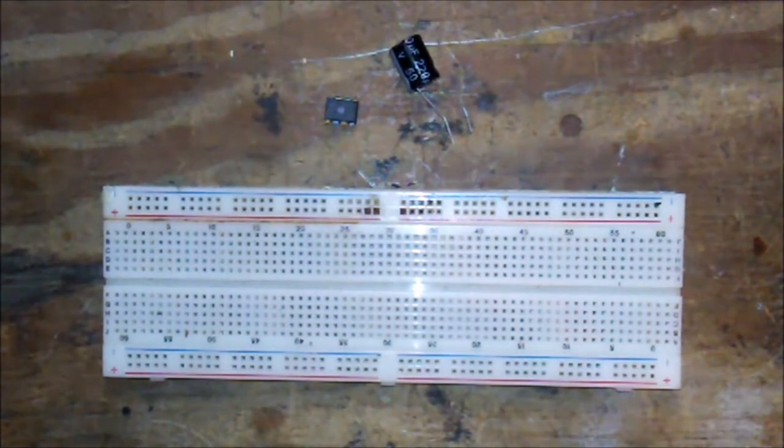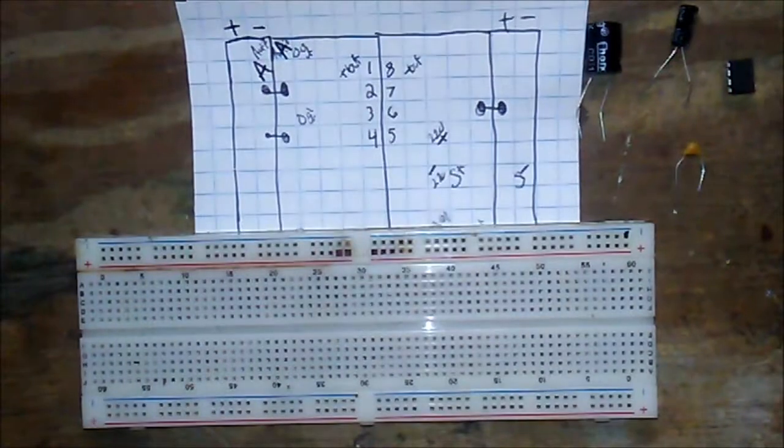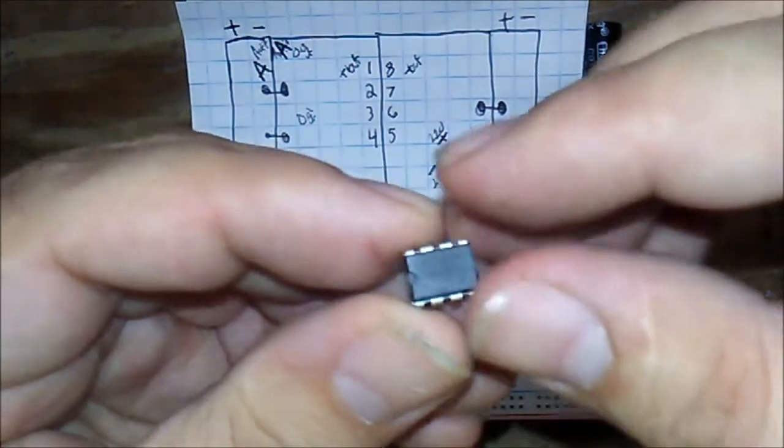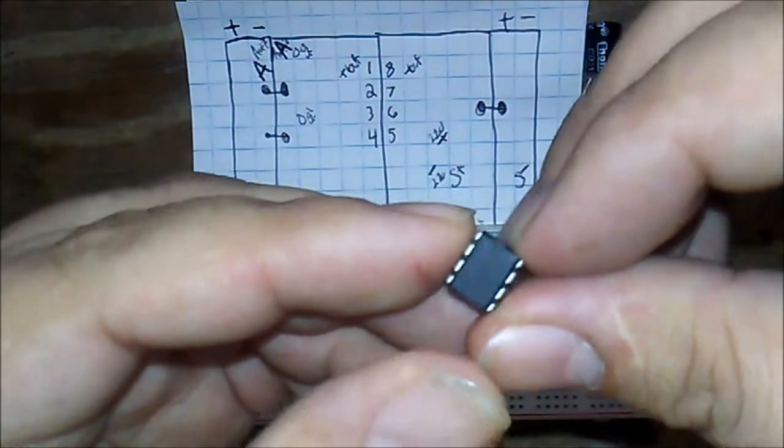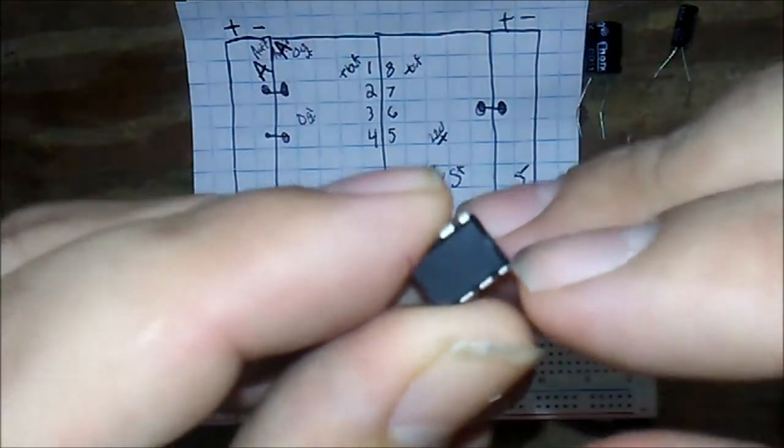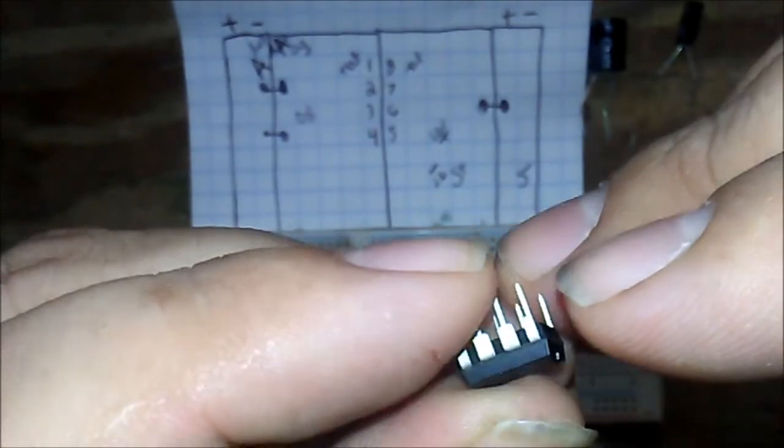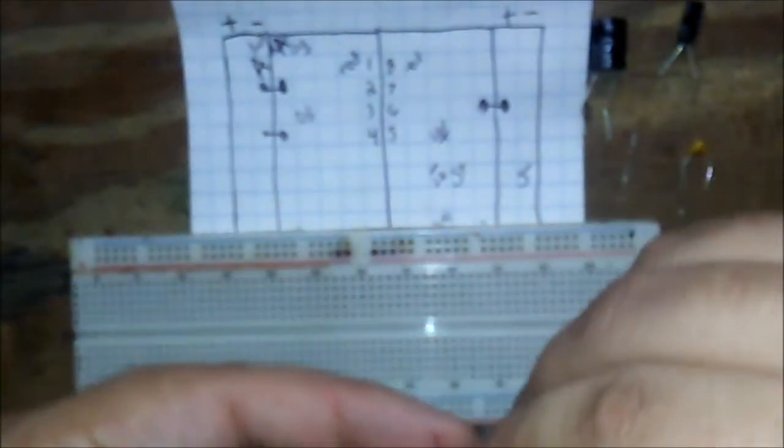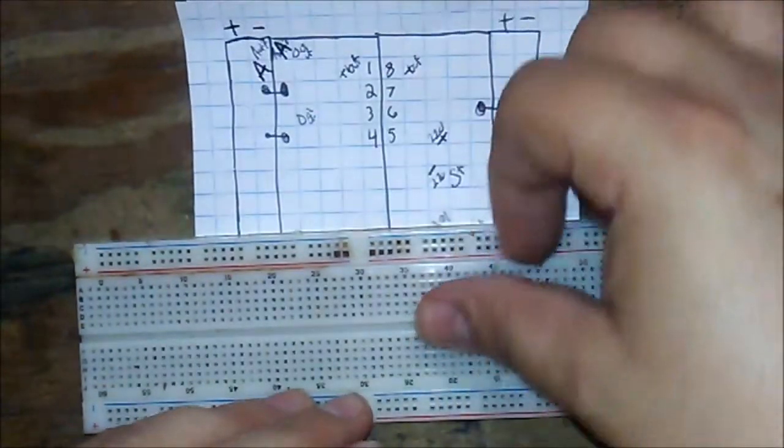All right, so let's follow the schematics and let's build it. Okay, let's start with the LM386 chip. I forgot to mention about the chip: every microcontroller has a little divot or circle or a knob in the front, meaning that is the front of the 386 chip. Meaning this is pin 1 and this is pin 8. So let's put it on the board.